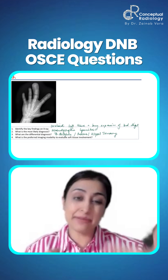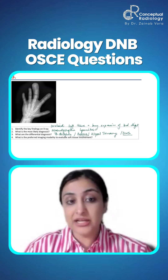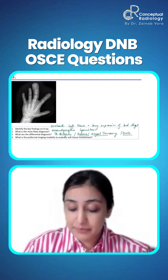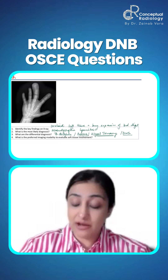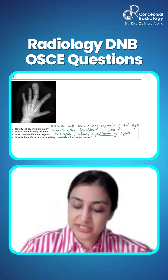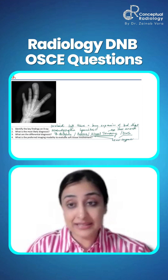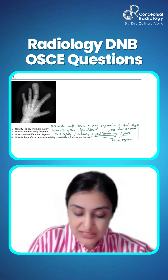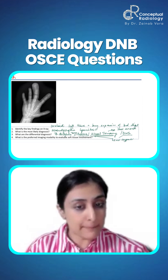Beckwith-Wiedemann would be hemihypertrophy. Beckwith-Wiedemann and Proteus would be systemic, not a localized digit. Sotos would be diffuse hypertrophy only. Klippel-Trenaunay seems like the best bet because that's associated with vascular anomalies. How do we distinguish? If there are associated vascular anomalies, that's Klippel-Trenaunay. If you see diffuse hemihypertrophy involving other parts of the body, we consider those. TB dactylitis — you will see more underlying bony changes and sclerosis, which we don't see here. These are the points you will write in a bullet-wise manner.